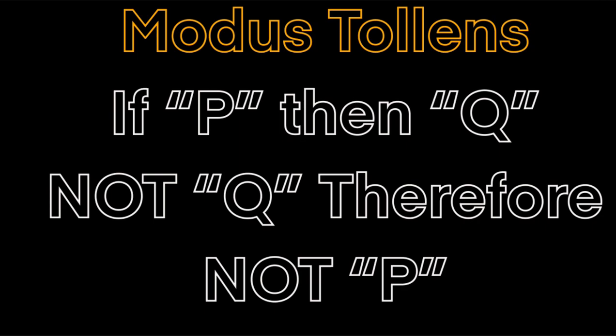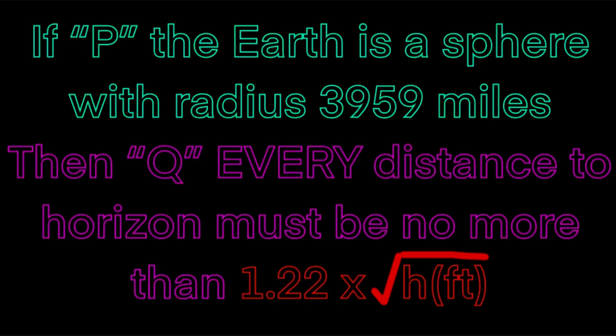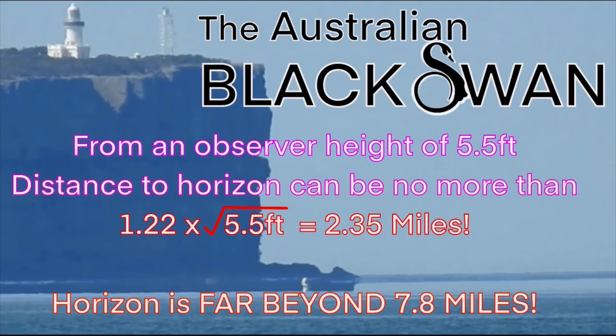So let's put this observation through modus tollens: If P, then Q. Not Q, therefore not P. If P — the earth is a sphere with radius 3,959 miles — then Q: every distance to the horizon must be no more than 1.22 times the square root of the observer's height in feet.